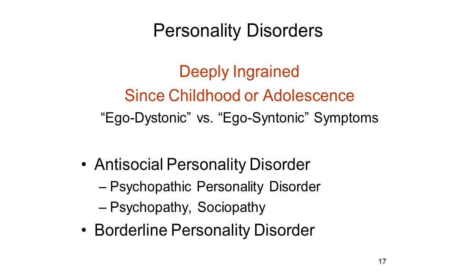In antisocial personality disorder, the person engages in a pervasive pattern of incorrigible antisocial behavior. People with this syndrome seem to be incapable of conforming their behavior to social demands. Antisocial personality disorder is also sometimes known as psychopathic personality disorder, psychopathy, or sociopathy. The pattern of incorrigible antisocial behavior is egosyntonic—the person with antisocial personality disorder doesn't think there's anything wrong; he's just the way he is. It's everybody else who sees that there's a problem.